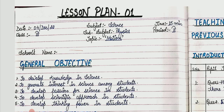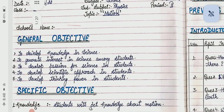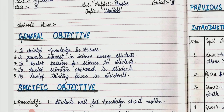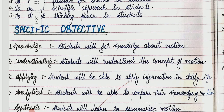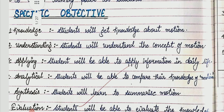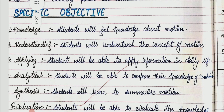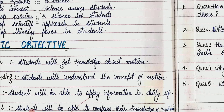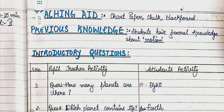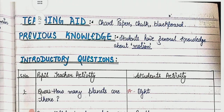Our topic is motion. Next is general objectives — we note five points related to general objectives. Specific objectives have six points: knowledge, understanding, applying, analytical, synthesis, and evaluation. After specific objectives, we note teaching aids: chart, paper, chalk, duster, pointer, etc.